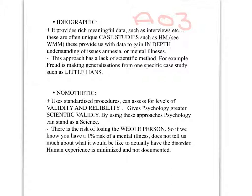A minus for nomothetic: we risk missing the whole individual if we are only looking at a tiny bit of their behavior, putting them into categories, and labeling them. For example, knowing you have a 1% risk of schizophrenia does not tell us much about what it's actually like to have that disorder. Human experience is minimized and not documented — we learn about genetic risk and symptoms, but not what it's like to actually experience schizophrenia.